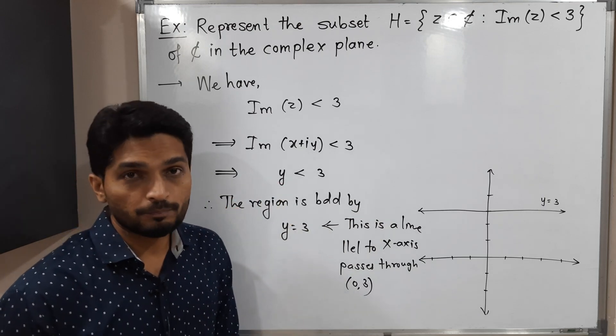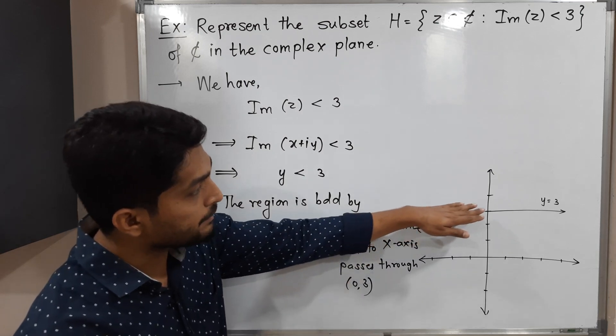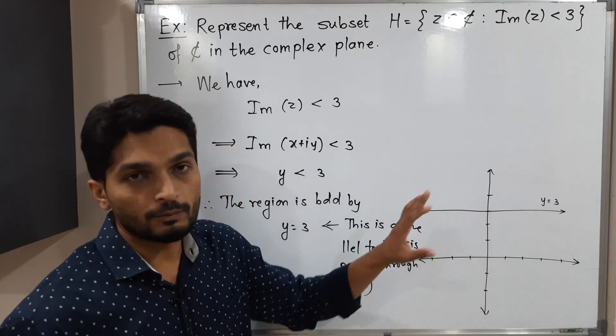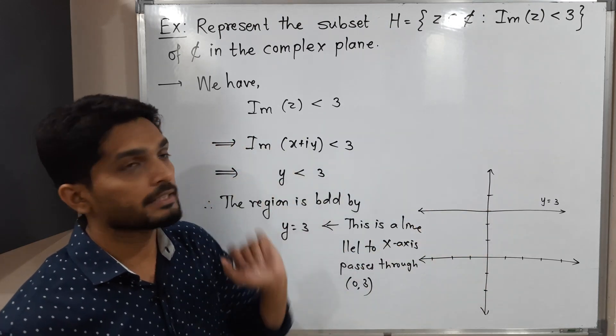That means here the region lies below this line. So the region below this line y equals 3, that is nothing but set H.